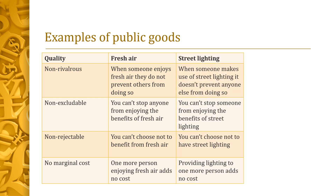Street lighting is another example of a public good. When someone makes use of street lighting, it doesn't prevent anyone else from doing so. You also can't stop someone from enjoying the benefits of street lighting. If we were to have two people — one that had paid for street lighting and one that hadn't — walking down the same street at the same time, it couldn't be lit for one and not lit for the other. You also can't choose not to have street lighting, so it's non-rejectable.